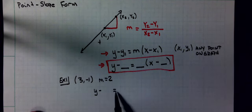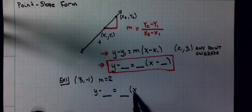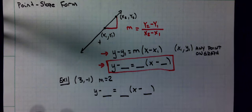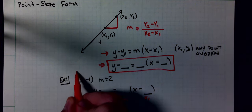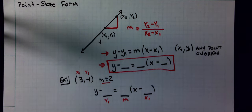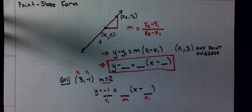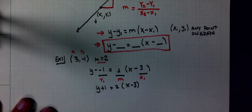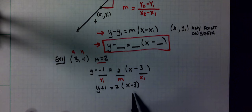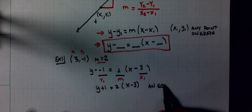Write the equation of a line in point-slope form that goes through the point (3, -1) and has a slope of 2. I'm going to write my template: y minus blank equals blank times open parentheses x minus blank. Now I fill in the blanks. The y1 is -1, so I put a minus of negative 1 there. The slope is 2. The x1 is 3. Cleaning it up: y plus 1 equals 2 times open parentheses x minus 3. If they just ask you to write an equation of the line or in point-slope form, you are done.